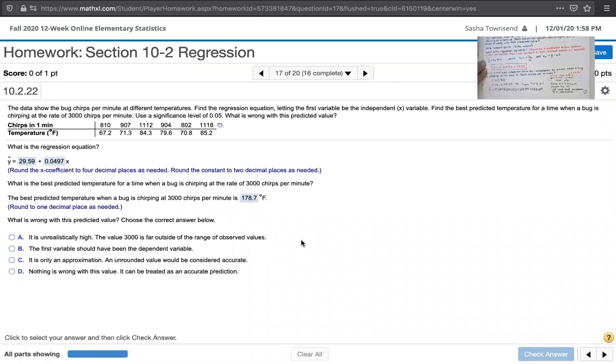Great. Okay, and then it says, what is wrong with this predicted value? Choose the correct answer below. Well, look at all the number of chirps per minute that we have. We've got 810, 907, about 1100, about 900, about 800, about 1100. This x value of 3000 chirps per minute is so much higher than all the x values over here. We're really extrapolating.